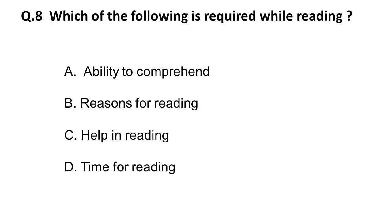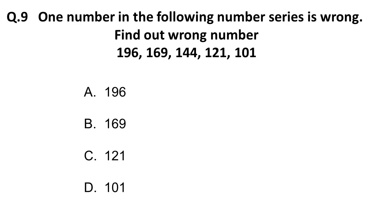The next question is: which of the following is required while reading? Options are: A) ability to comprehend, B) reasons for reading, C) help in reading, D) time for reading. All options look correct, but the most probable answer is A: ability to comprehend.